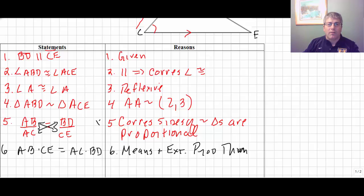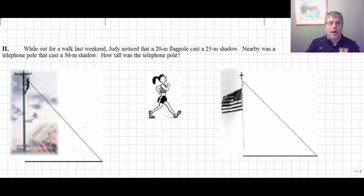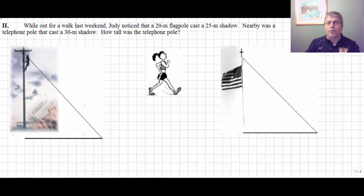So, the CPCTC of similar triangles and then means and extremes product theorem allows us to multiply out a proportion. Steps five and step six, those are really the new things here in this video. Let's move down to another sample problem. We're talking about proportions here in similar triangles, but this is a workout problem instead of a proof, more of a find.